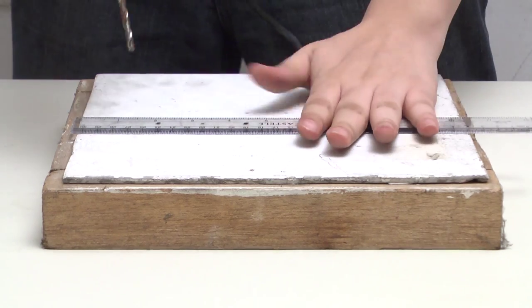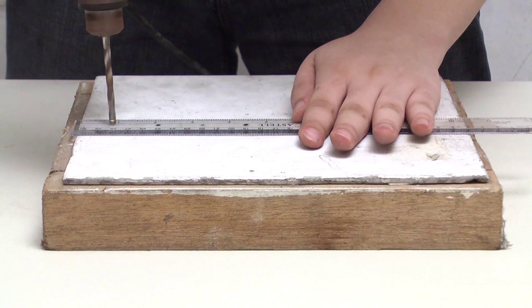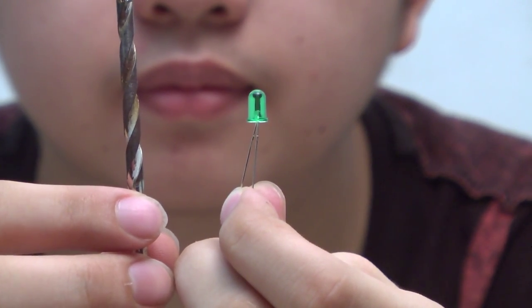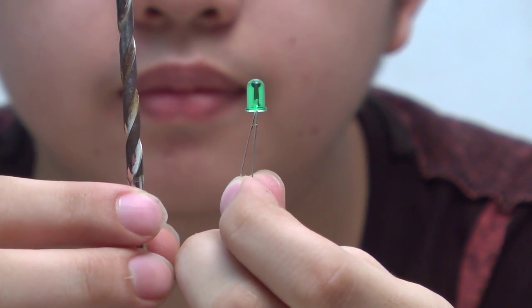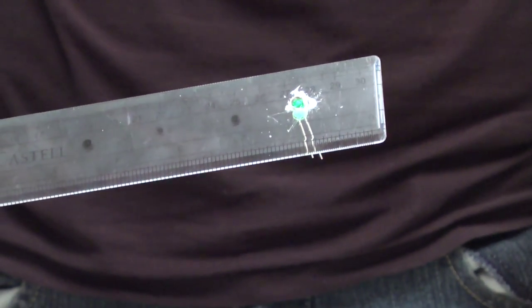We first begin by drilling holes on the ruler. As for the drill bit, I'll be using a 6mm as it has the same size as the LED bulb that I bought. So after that, I test it out. And it fits nicely.